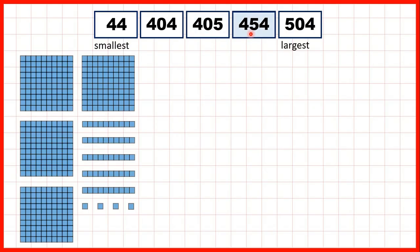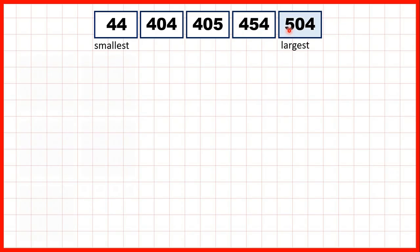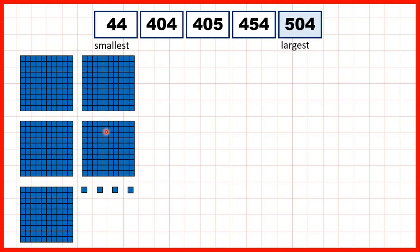Then 454, so four hundreds, five tens, and four ones. And our largest number, because it had the most hundreds, was 504. So that's five hundreds and four ones.